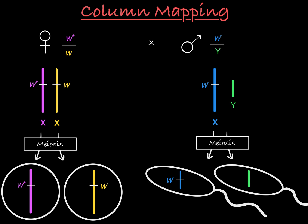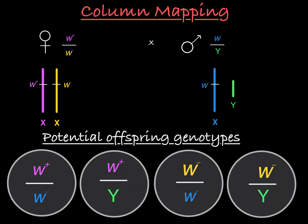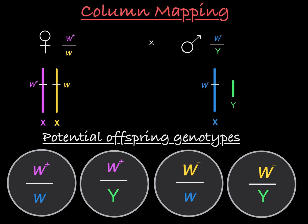In fertilization, one egg from this female will fuse with one sperm from this male to form a diploid genotype. So we know that this female can pair each X with either the X or the Y from the male, leading to four possible genotype combinations associated with the sex chromosomes. But now remember that we are simultaneously considering two other chromosome pairs with chromosome 2 and chromosome 3, and things can get messy and confusing. That's where column mapping comes in.